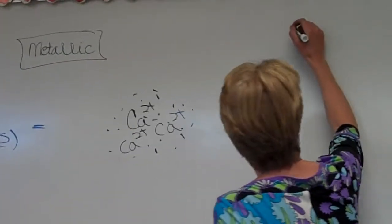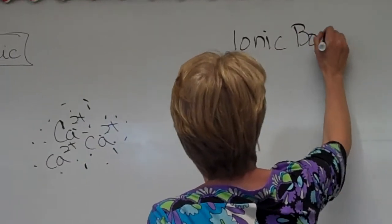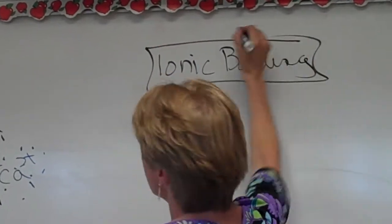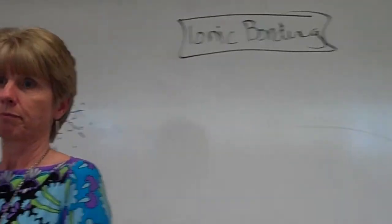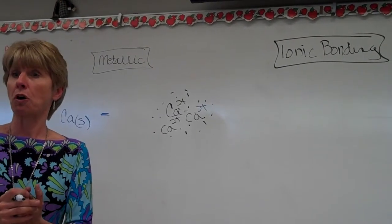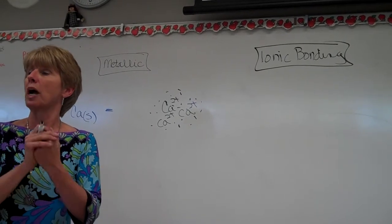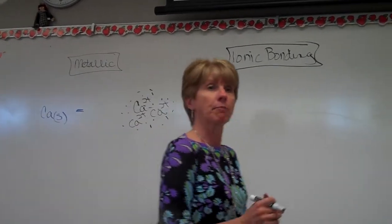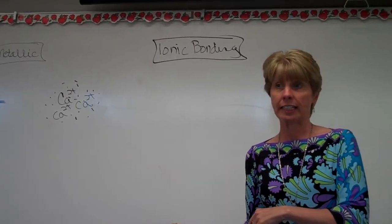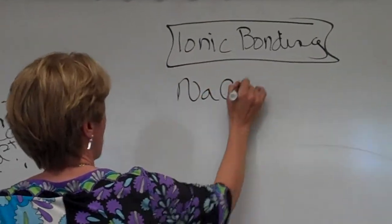The second kind of chemical bond is ionic bonding. The key word for ionic bonding is transfer. In an ionic bond, electrons are transferred from one element to another. To see if something is ionic or not, you have to look at the electronegativity tables. So let's do an example. Let's do sodium chloride.